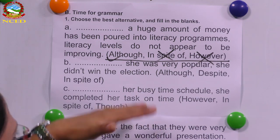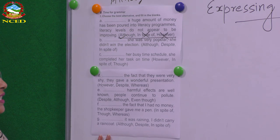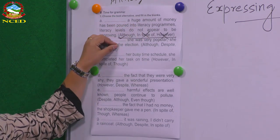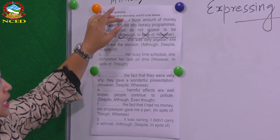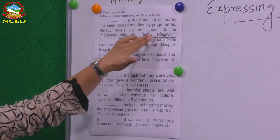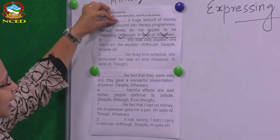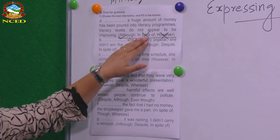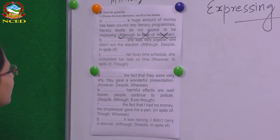Whenever you do this type of exercise, be careful about whether the blank is before the situation or before the unexpected result. That will give you a clue about what type of word to use. Also, if the gap is followed by a clause or a noun phrase, that also indicates what sort of word should be used. Now look at number B.